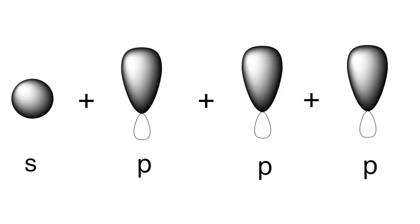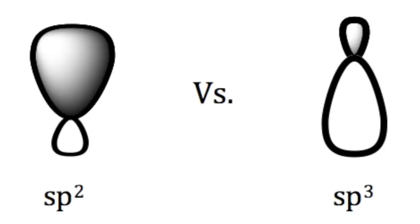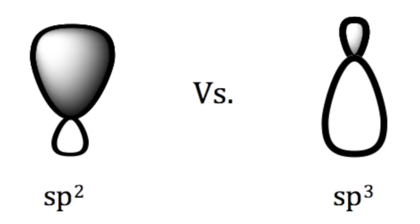Similarly, if we have sp3 orbital, we put one s and three p orbitals, giving us one-fourth s and three-fourths p. Comparing sp2 and sp3, sp2 clearly has higher s character, implying that it is lower in energy.